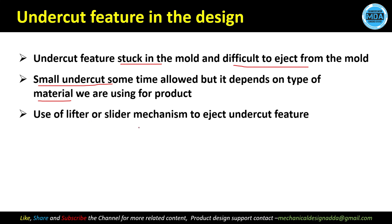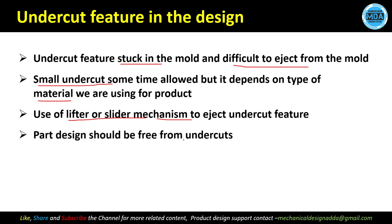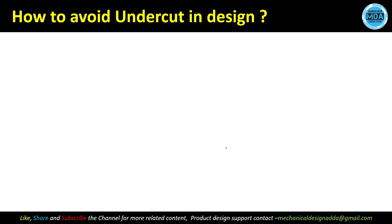If the undercuts are required as per the application, we can use the lifter and slider mechanisms. I will explain these in the next slides. With the help of these mechanisms we can manufacture undercut features, but we should always try to design parts free from undercuts — we don't allow undercuts if they are not required by the application.